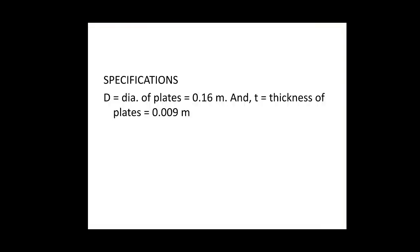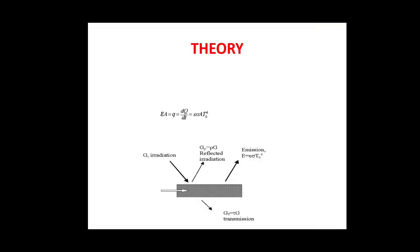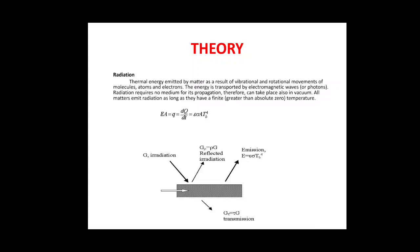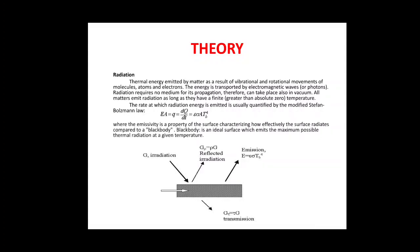This is the specification of the plates: the diameter is 0.16 meter and the thickness is 0.009 meter. Radiation is a mode of heat transfer where it does not require any material medium to travel. In this particular mode of heat transfer, the rate at which radiation energy is emitted is usually given by the Stefan-Boltzmann law, which you can see here. In this equation, epsilon is the emissivity, which is a property of the surface characterizing how effectively the surface radiates compared to a black body. The emissivity of the black body is always considered as 1.